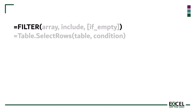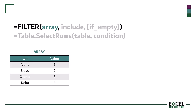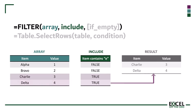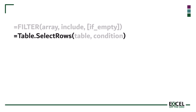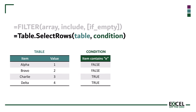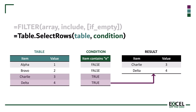With the FILTER function, the first argument is the array — these are the values that we want to filter. The second argument is include, which must be a list of true or false values, one for each row, and only the rows which return true are retained. In Power Query, with Table.SelectRows, the first argument is the table, and the second argument is condition — a function that returns true or false for each row, and only rows which return true are retained. So these two functions, one in Excel and one in Power Query, have very similar syntax.